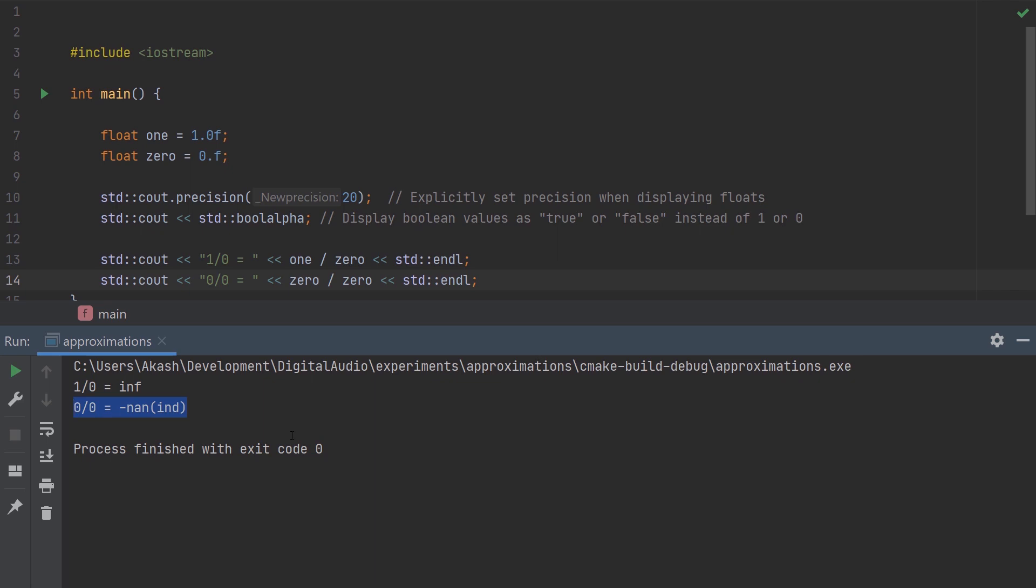IND stands for indeterminate number, and NaN is not a number. There are certain computations whose results cannot be determined by the floating point unit, and they are marked as IND. But for all practical purposes, it's not a number.